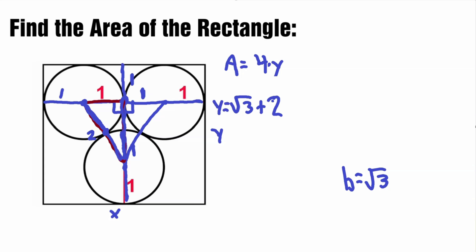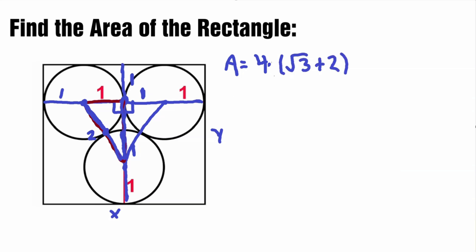So let's multiply that with our x to find our area. Our area is equal to 4 times (square root of 3 plus 2). Now let's distribute: 4 times square root of 3, plus 4 times 2 — and 4 times 2 equals 8. So our final answer is 4 times the square root of 3 plus 8. This is in units squared, but since no units are given we'll leave it as that — remember, area is always squared. This is our final answer.